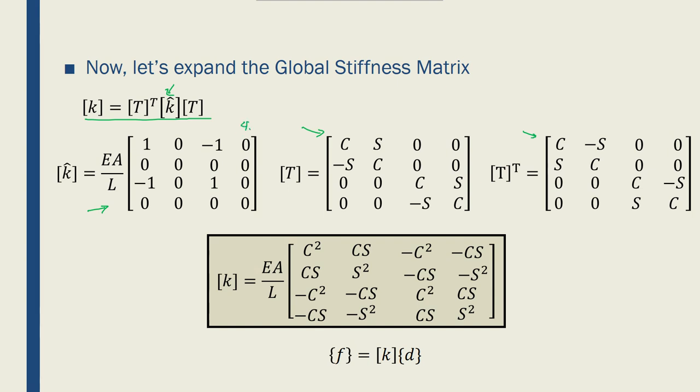So I have a 4x4 here, a 4x4 matrix here, and a 4x4 matrix here. Multiplication of all of these is going to give me a 4x4 stiffness matrix.